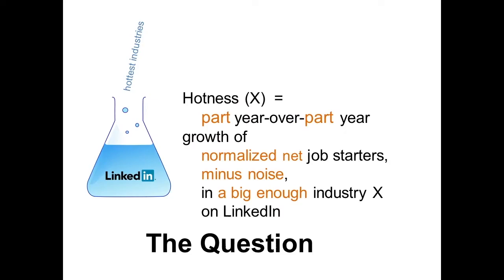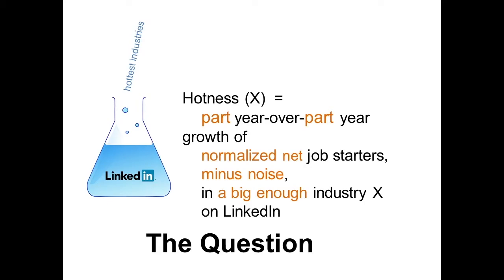Okay, this has got to be it, right? This is the definition. We took into account seasonality, we normalized, we looked at the net inflow, we took out the noise, and we thresholded it. It's got to be good, right? Well, yeah — we're getting somewhere. You can see some trends developing. You can see some big growth in the internet industry around the right time. There's something going on in real estate. But it still looks like spaghetti, and it doesn't tell a story.